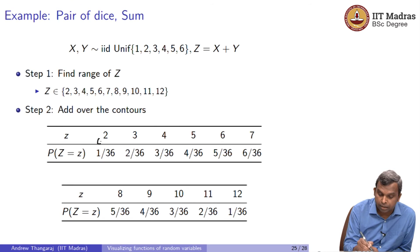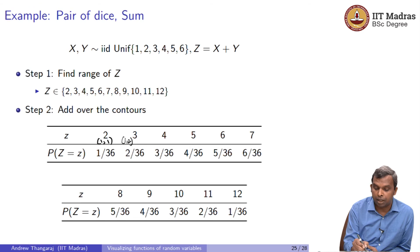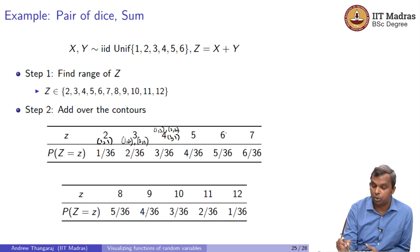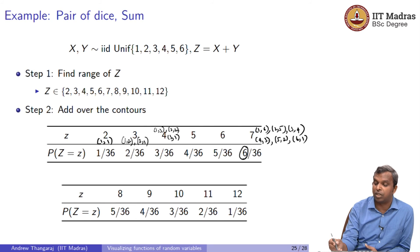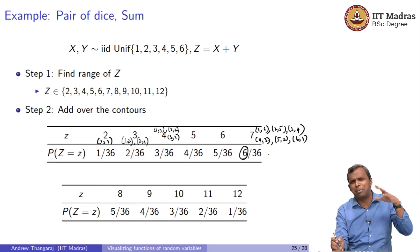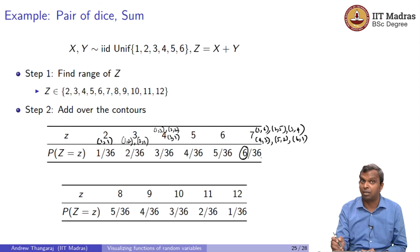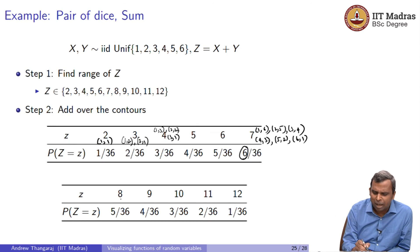Once you find the number of points, it is simply 1 by 36 added so many times and that gives you the answer directly. You add over the contours for every particular value of z. The value of z equals 2 is just 1 comma 1, value of z equals 3 is 1 comma 2 and 2 comma 1, value of z equals 4 is 1 comma 3, 2 comma 2 and 3 comma 1, value of z equals 5 I showed you. For 6 and up to 7 you will get all possibilities. Notice what happens for 7. All these 6 possibilities are there. So, you got 6 by 36.